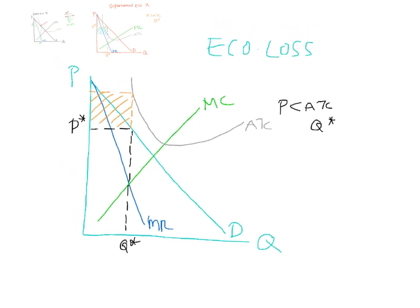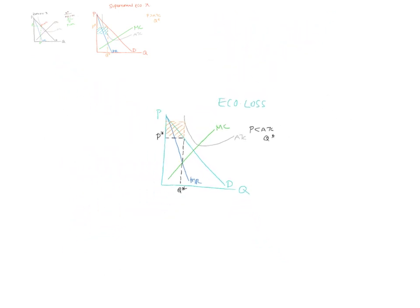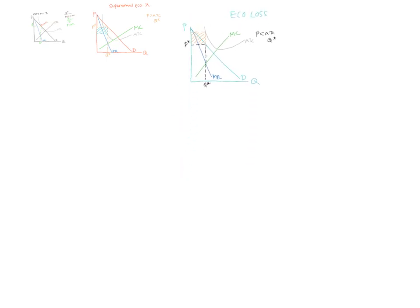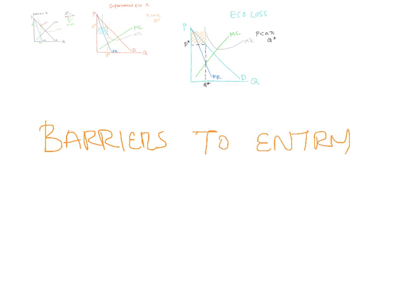There's no difference between short run and long run for monopoly. So if you're making a short run economic loss, profit, or zero economic profit, it can continue in the long run because there are barriers to entry. Other firms simply cannot enter and start up in your industry — barriers to entry.